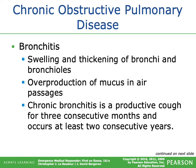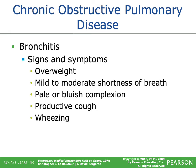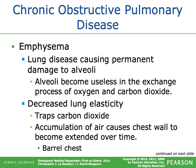Bronchitis involves swelling and thickening of the bronchi and bronchioles, with overproduction of mucus in the airways. Chronic bronchitis is characterized by a productive cough for three to four consecutive months, occurring at least two consecutive years. Signs and symptoms include most patients being overweight, mild to moderate shortness of breath even at rest without supplemental oxygen, a pale or bluish complexion, productive cough, and audible wheezing on lung auscultation.